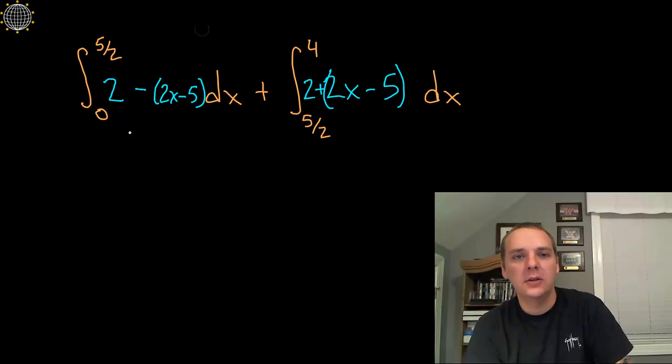So let me rewrite that just to clean things up a bit. This will be the integral from 0 to 5 halves of 2 minus 2x plus 5. So that would make 7 minus 2x.